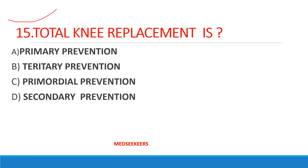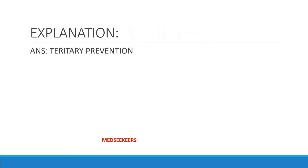Here is another question: total knee replacement is — option A: primary prevention; option B: tertiary prevention; option C: primordial prevention; option D: secondary prevention. Your answer should be tertiary prevention. Sometimes they give a clinical scenario and ask what type of prevention it is — for example, vaccination is which kind of prevention. These are common questions regarding prevention.